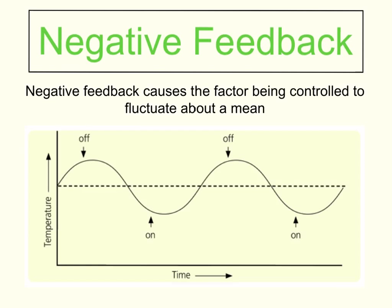In a homeostatic control mechanism, negative feedback causes the factor being controlled to fluctuate about a mean or an average. Fluctuate means it goes up and down — it doesn't stay at a particular set level, but it revolves around a mean. The example we're going to look at, and I've got this diagram here to help show it, is the temperature inside an oven.